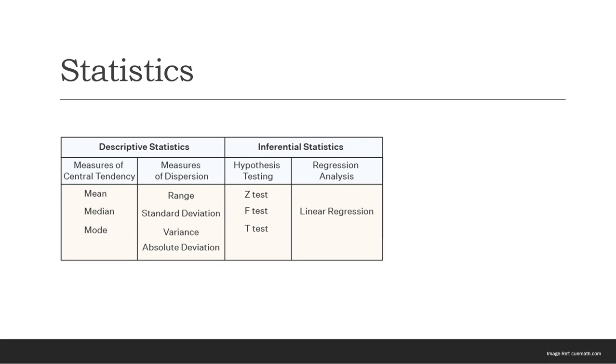Measures of central tendency, also known as measures of center or central location, aim to describe the entire dataset with a single value that corresponds to the middle or center of its distribution.